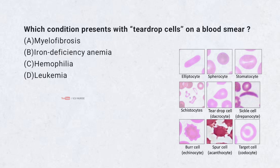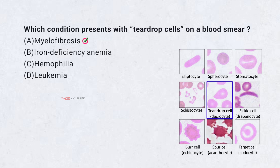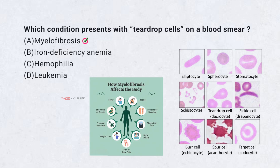Which condition presents with teardrop cells on a blood smear? A. Myelofibrosis, B. Iron deficiency anemia, C. Haemophilia, D. Leukemia. Correct answer: A. Myelofibrosis. Teardrop-shaped RBCs, also called dacrocytes, are common in myelofibrosis due to bone marrow scarring.